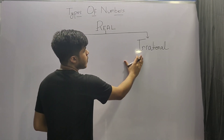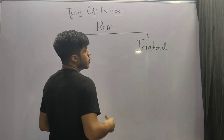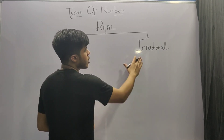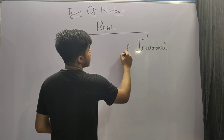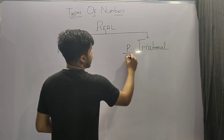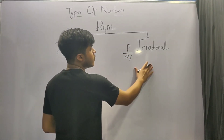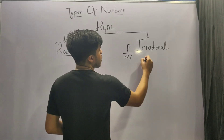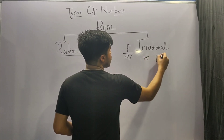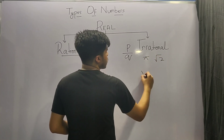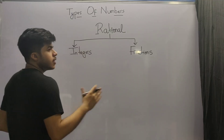Irrational numbers are those which cannot be represented in the form of P by Q. Some examples of irrational numbers are pi, root 2, root 3 plus 1, and so on.